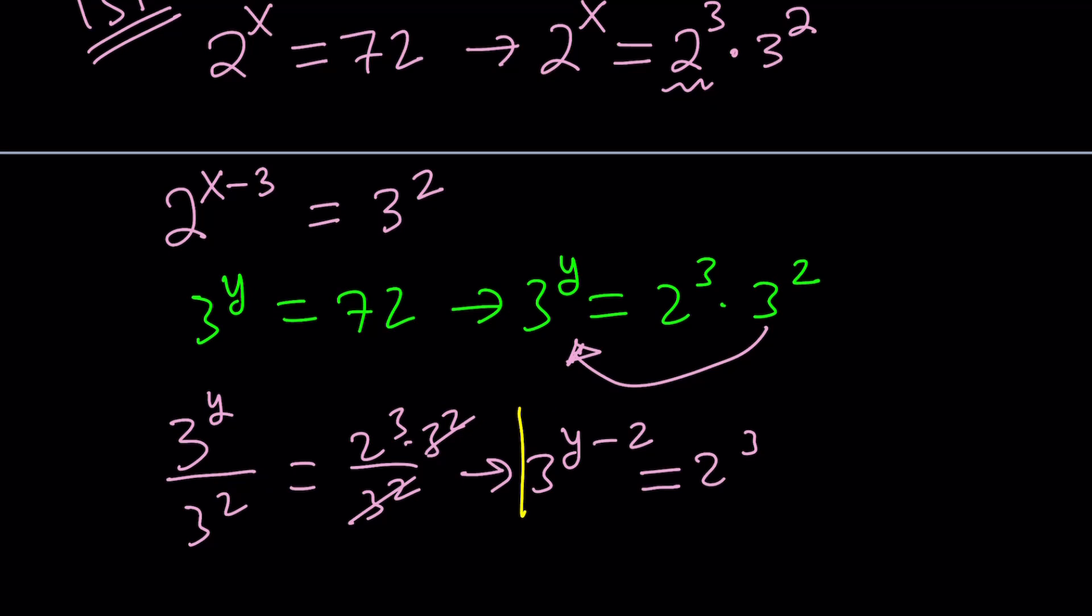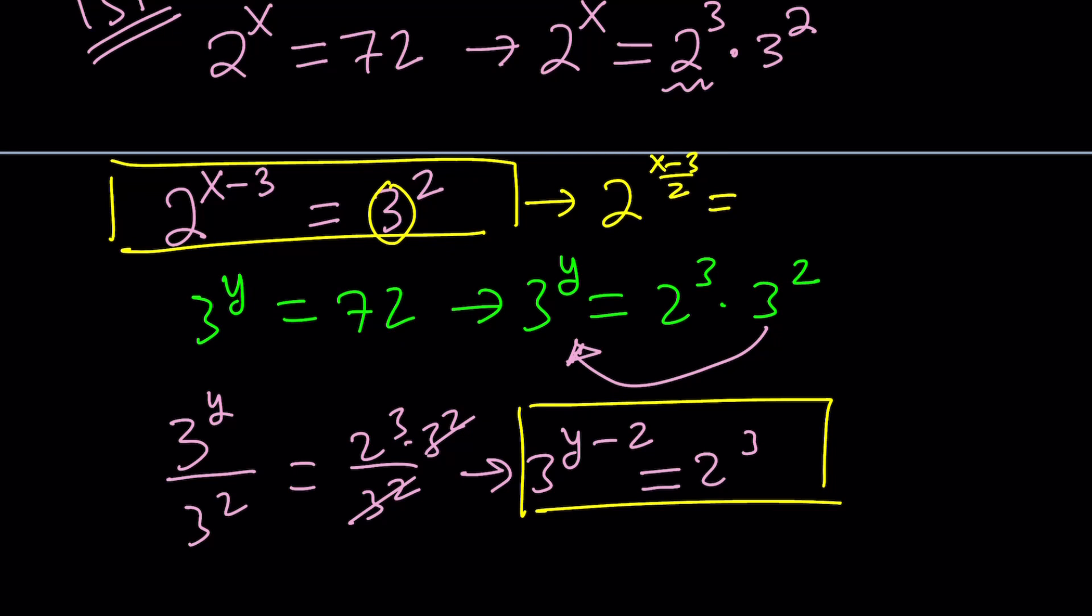So now I have two equations. How can I put these two together? That's going to be the question here. What I can do is, actually from here, I can isolate the 3. So let's go ahead and divide these exponents by 2 on both sides, in other words, raising both sides to the power 1 half or square rooting both sides. 2 to the power x minus 3 over 2 equals 3 to the power 1. And now, this is something I can substitute here. So I'll replace the 3 with 2 to the power something. That way, I'm going to have the same base. So that's the whole idea.